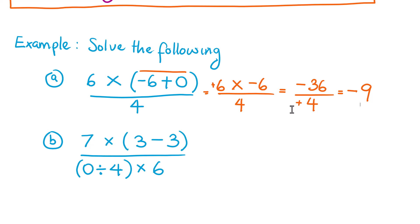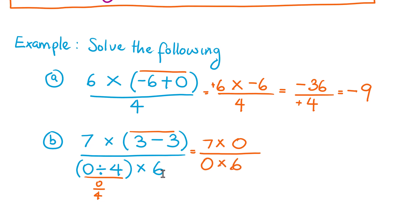The second example is different: seven times (three minus three), all over zero, divided by four times six. We solve the parentheses first: three minus three gives zero. Then zero divided by four equals zero. So we have seven times zero over zero times six, which simplifies to zero over zero. This creates a special case — an indeterminate form.